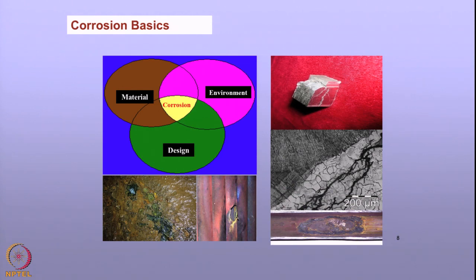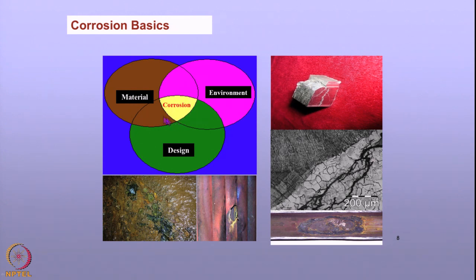Let me start with corrosion basics. Corrosion involves a material that we talk about and an environment that comes into contact with it. These materials are also subjected to various structural conditions such as operating loads, tensile fatigue, and so on. All these lead to the corrosion of materials. Corrosion can be uniform or localized, such as what you see in boiler tubes, or there can be cracks. A corrosive environment exposed to materials leads to corrosion.